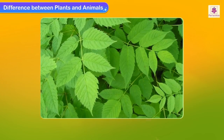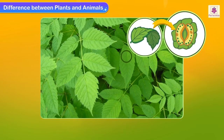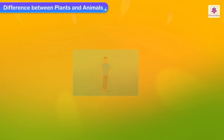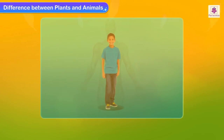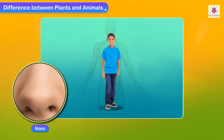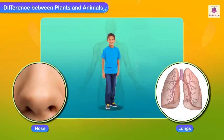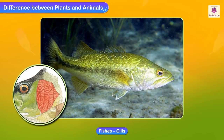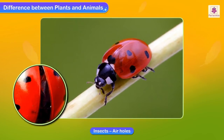Animals that feed on both plants and animals are called omnivores. Plants take in air through tiny openings called stomata on the leaves. Animals have different breathing organs; for example, man breathes through the nose and lungs, fishes breathe through gills, and insects breathe through air holes.